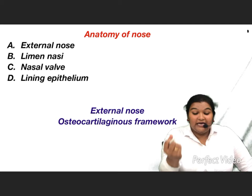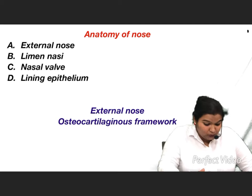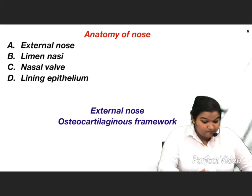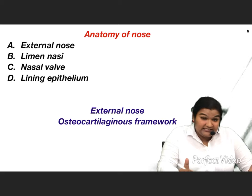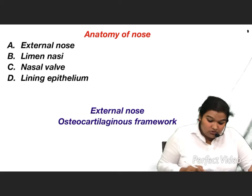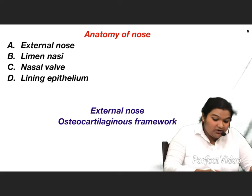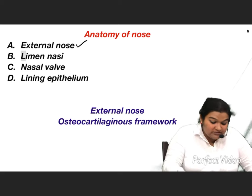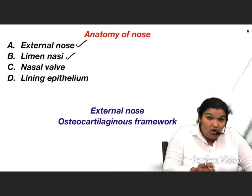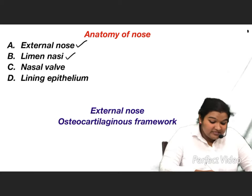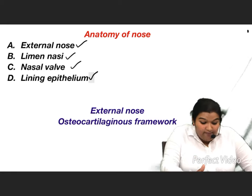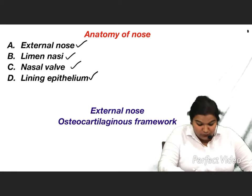In the anatomy part 1 of nose, we are going to see about the external nose or osteocartilaginous framework of nose, limen nasi or the vestibule, nasal wall, and the lining epithelium of nose.